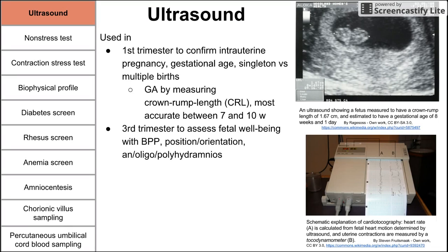In the third trimester, ultrasound can be used to assess fetal well-being using the biophysical profile. It can also be used to determine baby's position or orientation — for instance, if baby is in a cephalic position ready for vaginal birth, or in a breech position and might require a C-section. It can also determine water status and produce results like anhydramnios, oligohydramnios, and polyhydramnios.